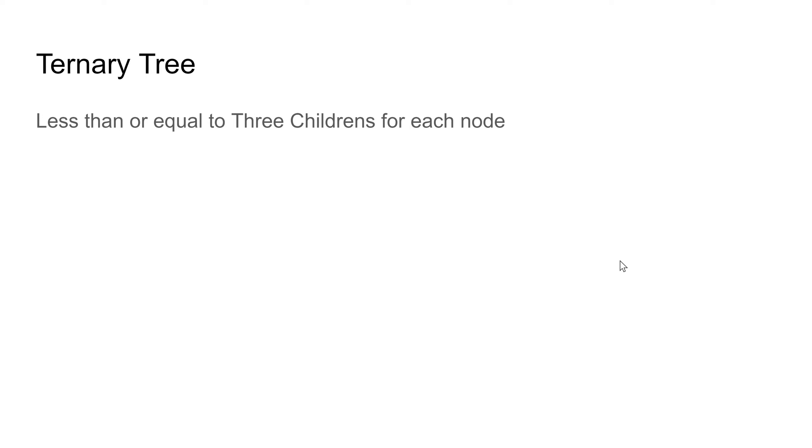Binary tree: less than or equal to three children for each node.